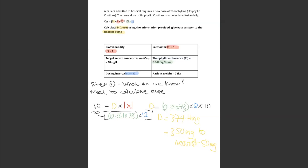As you can see, I've pretty much put everything into the equation and then what you need to do is rearrange it. So 10 is the concentration, CSS. 10 is equal to the dose times 1 for the bioavailability times 1 for the salt fraction, divided by the clearance — which is 0.04 times 78 — and the dosing interval, which is 12 hours. We rearrange the equation to make the dose the subject.